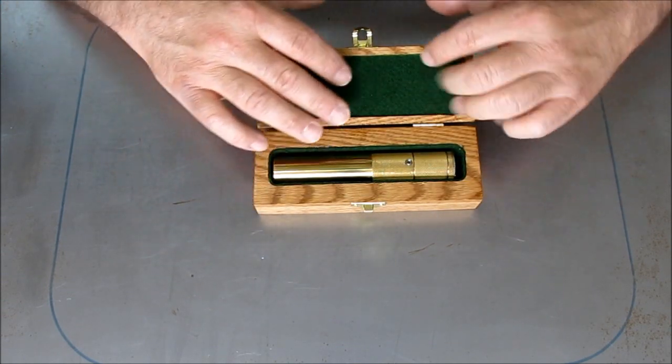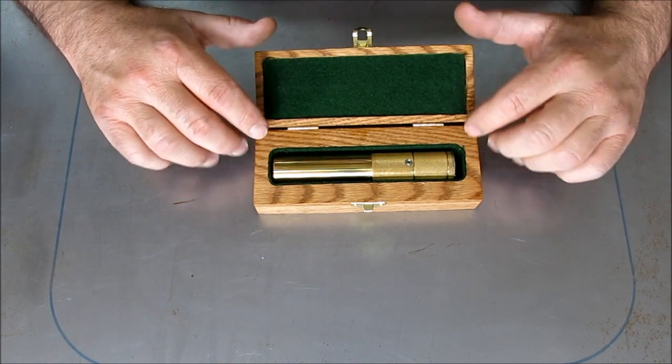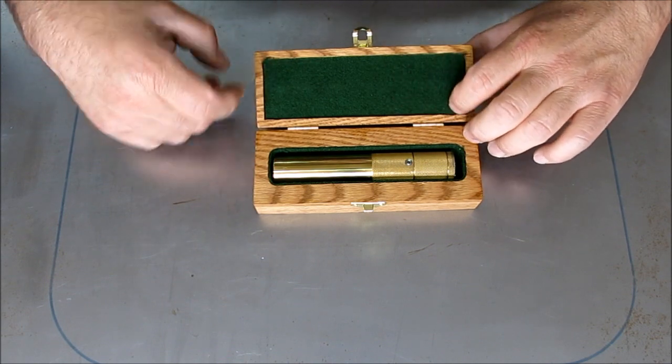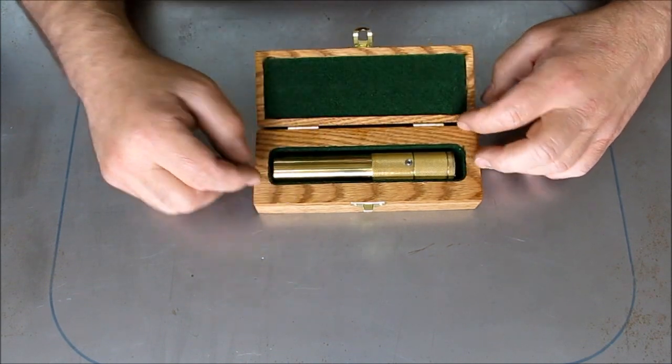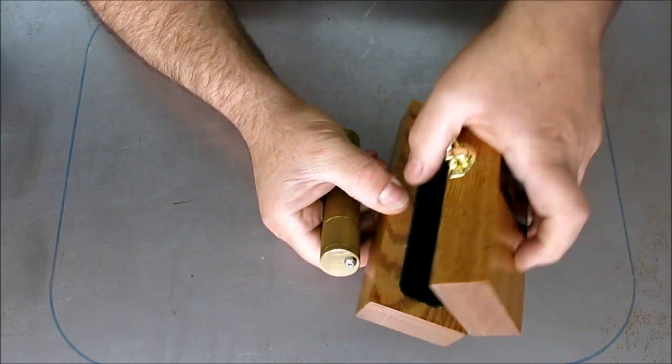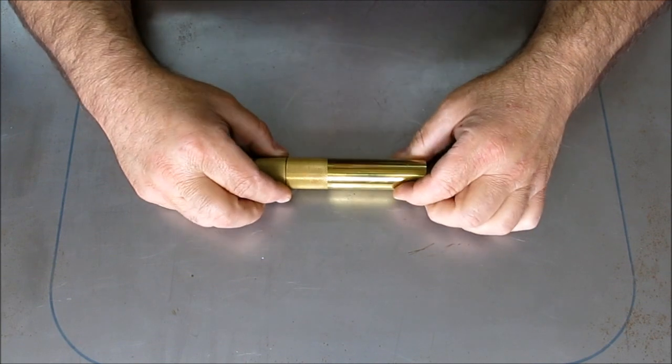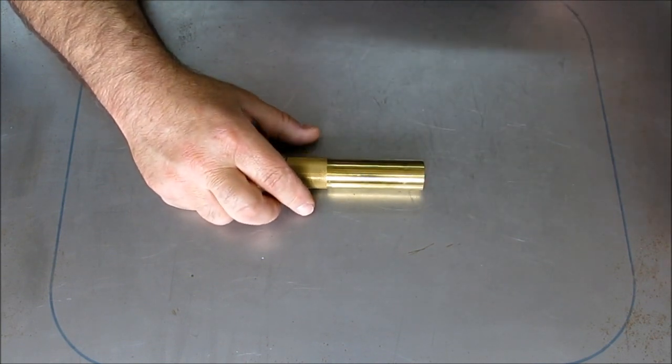And he said that this green felt, he relined a Gerstner box and and this is some of the leftover felt. So he made me a little wooden box and everything. And what's in here, let's pop it out. We'll set that aside here. And what this is, is,